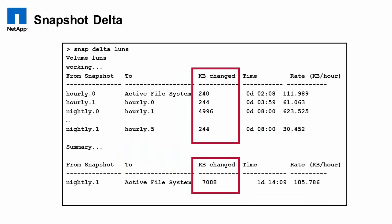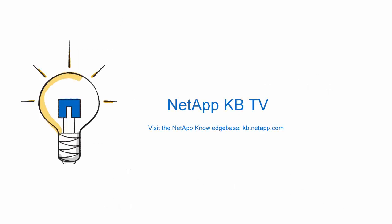One command you can use to see how your file system is changing over time is the snapshot delta command. As you can see in this case, hourly.1 has a pretty big divergence when compared to the other snapshots, and compared from the most recent snapshot to the active file system, you can see what your kilobytes changed is. Now, this isn't really going to give you a very good idea of how much space you can get back as a result of deleting any particular snapshot. To do that, you'll want to use the snap reclaimable command. The syntax is: snap reclaimable, the volume name, and then the snapshot name. When you run that command, you'll get a progress bar and it'll come back and tell you approximately how many blocks are unique to that snapshot and will be freed if you go ahead and delete it.